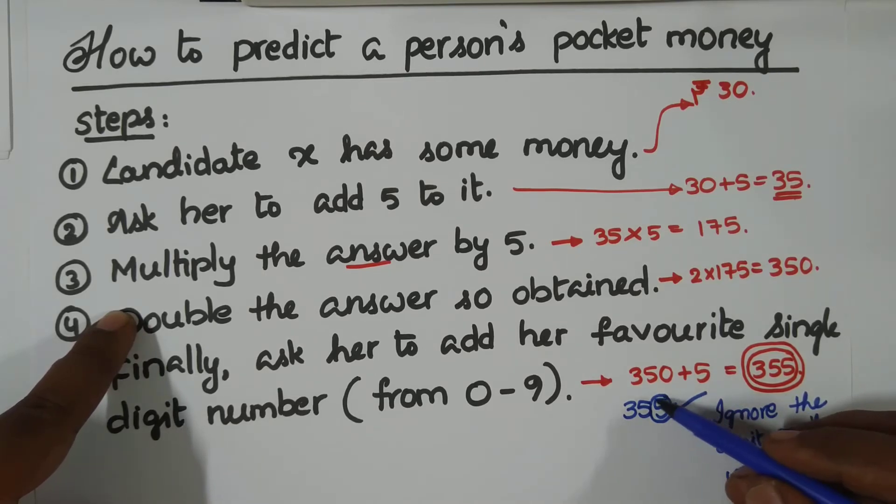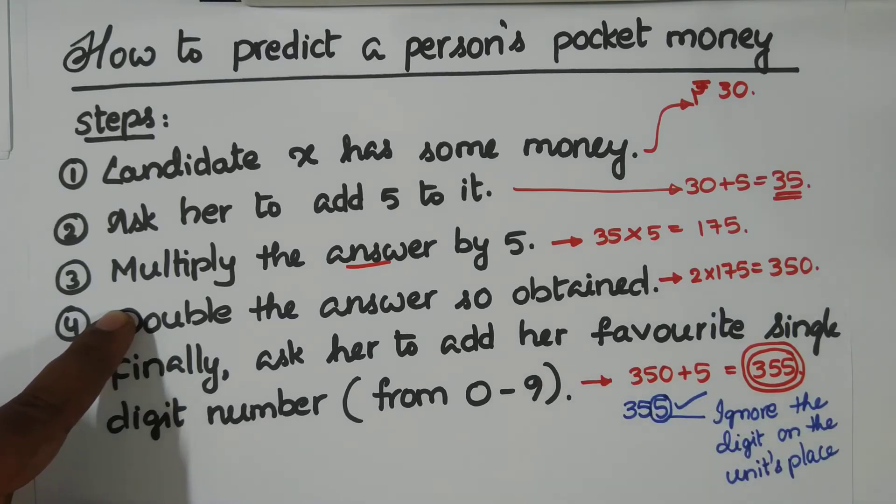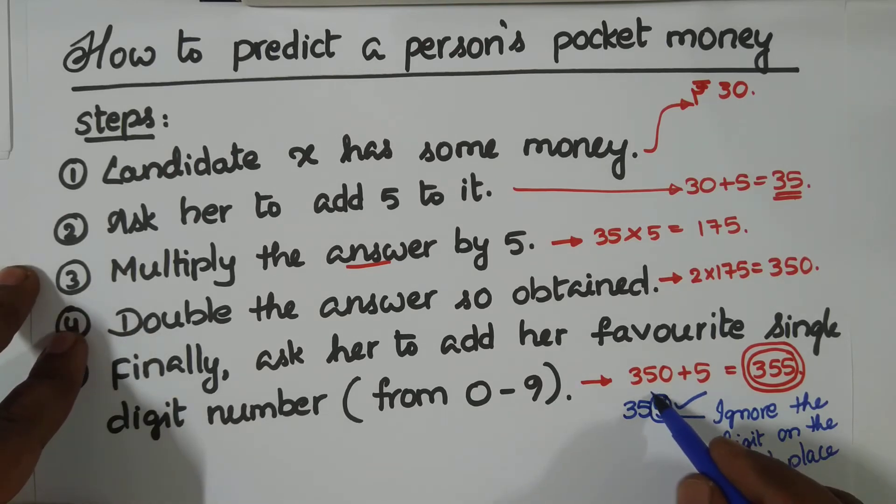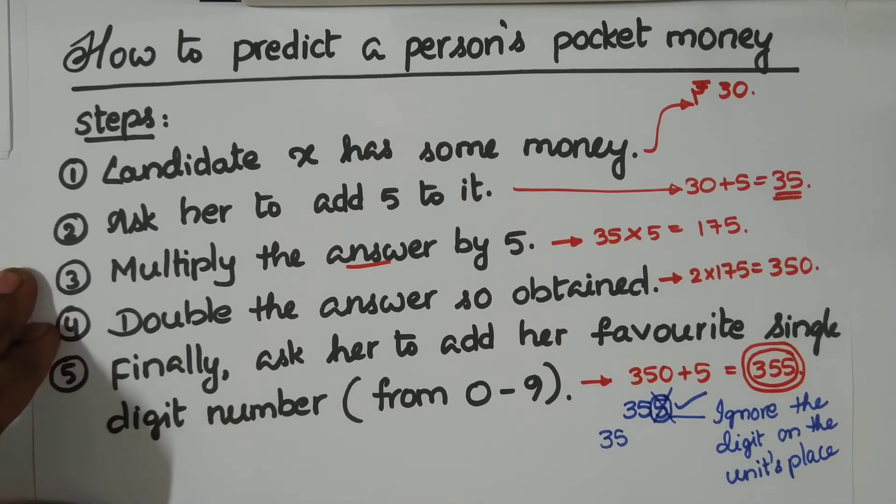This is unit's place, this is 10th, and this is 100th. So just ignore this. Now what do you have? The remaining number is 35.